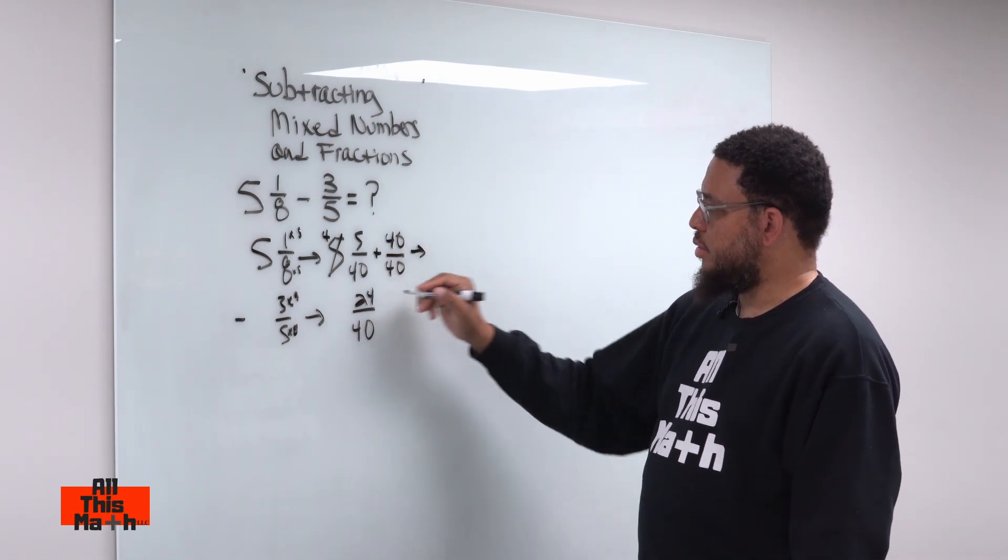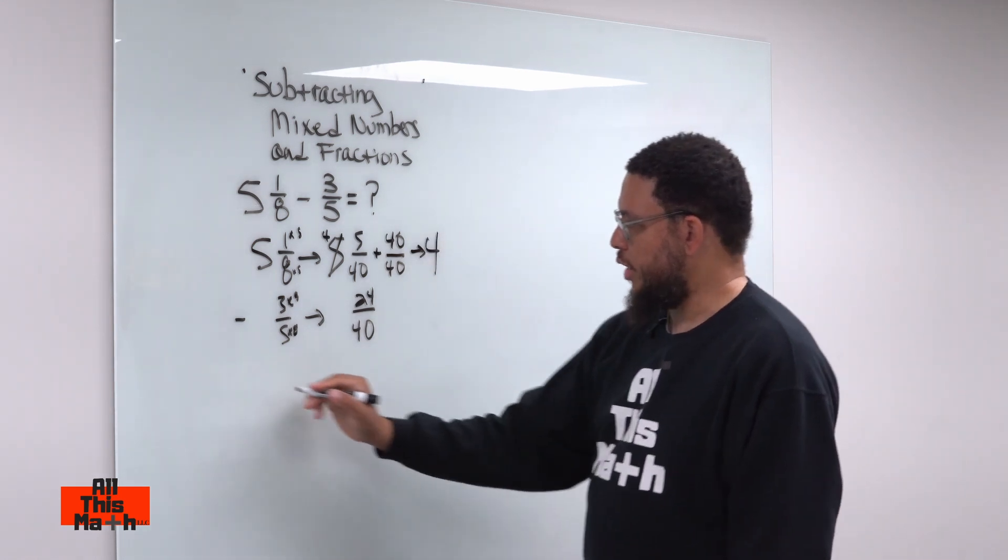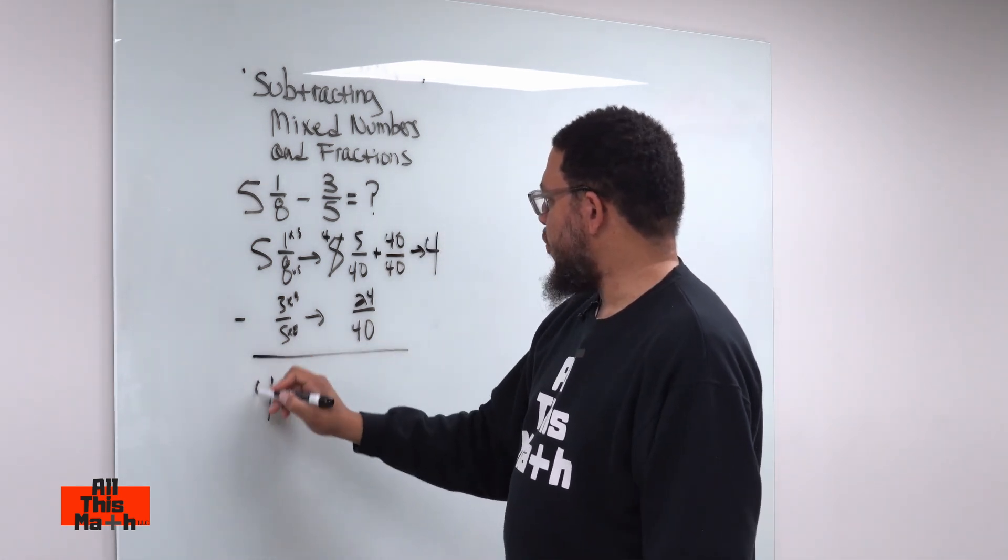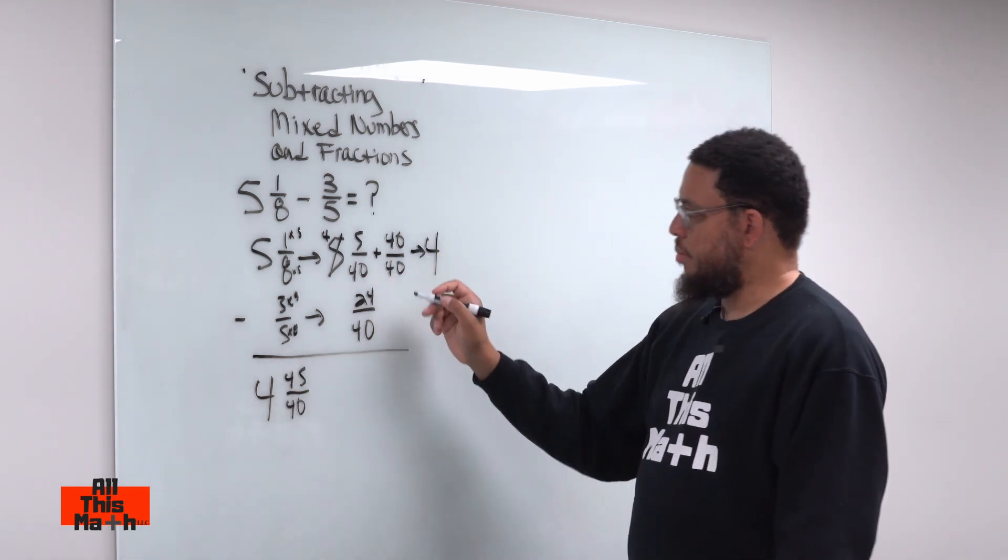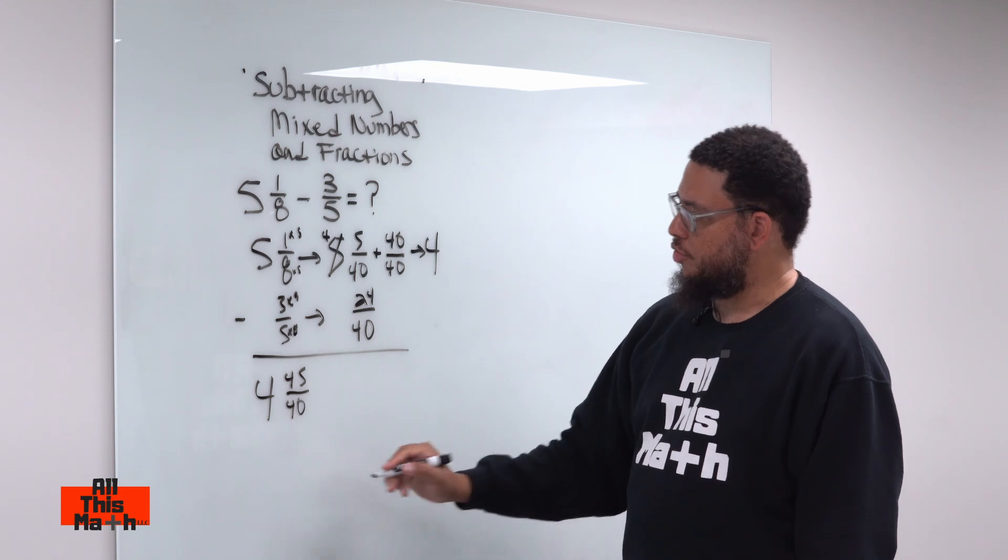So, what happens is you're going to have four, matter of fact, let me write it down here. You're going to have four and 45 fortieths. Where'd the 45 come from? Five plus 40. That's where the 45 came from.